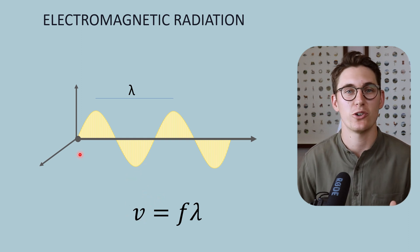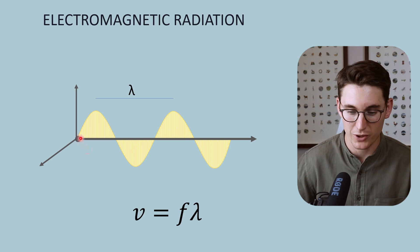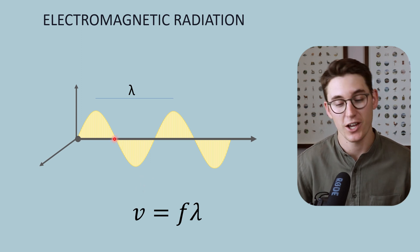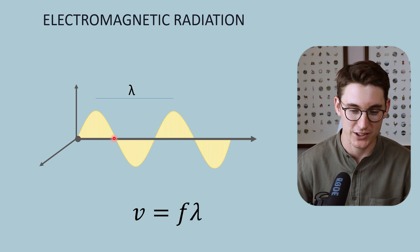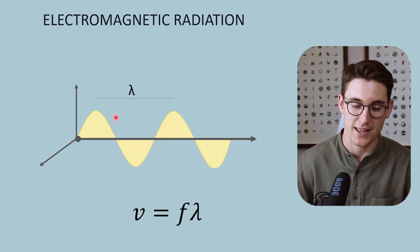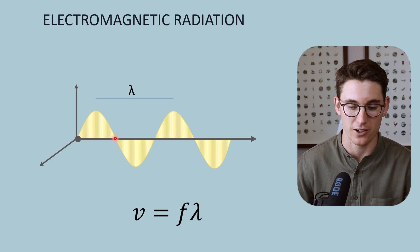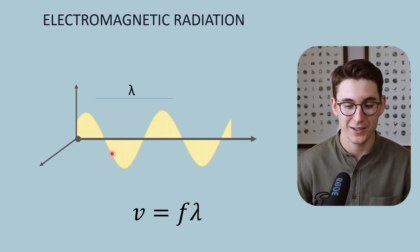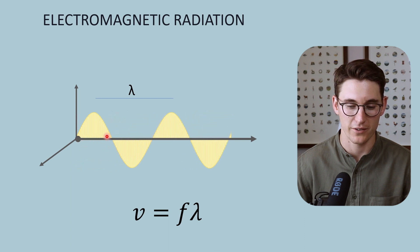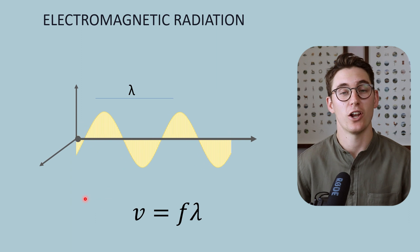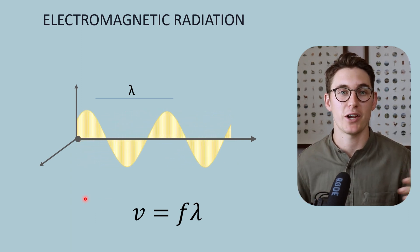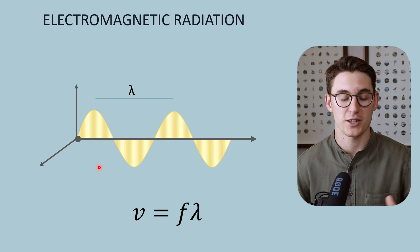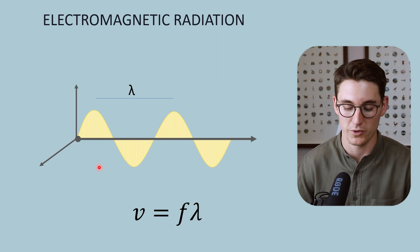Electromagnetic waves are transverse waves, because the movement of energy — the direction of the wave — is perpendicular to the movement of those waves. If we take a particular point in that wave and watch what it does, it will go up and down — perpendicular to the movement of the wave. We can also get longitudinal waves, where molecules move in the same direction as the wave's propagation, and we'll look at that when we cover ultrasound waves. But in electromagnetic radiation, the movement is transverse.